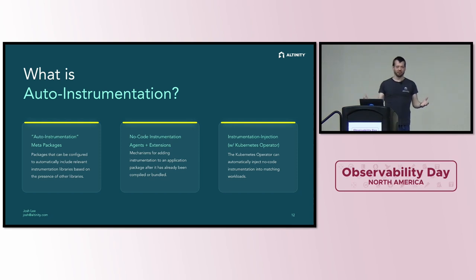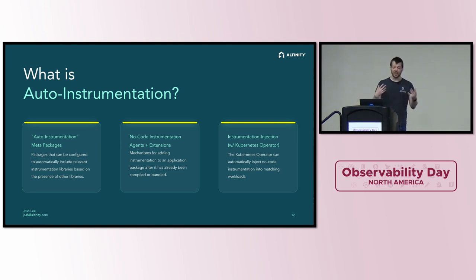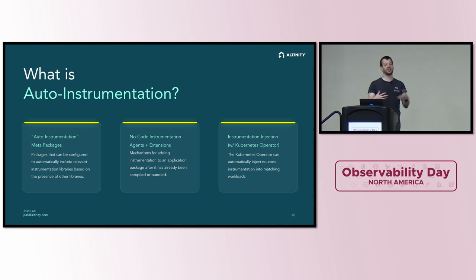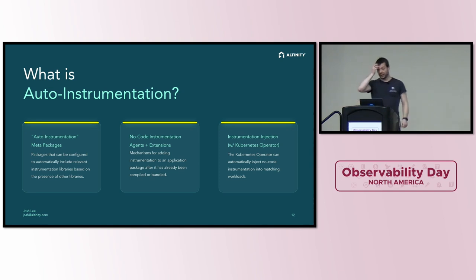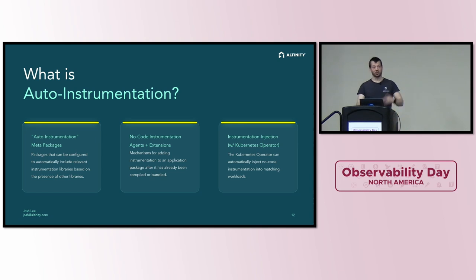So what actually is auto-instrumentation? Let's disambiguate. We have instrumentation libraries as the first step. Then we have auto-instrumentation meta-packages, which can observe what's happening inside the same code and pull in or activate other dependencies as needed. That's cool, but it's still inside our process. Then we get to no-code instrumentation agents and extensions — mechanisms to observe code after it's already been compiled or bundled, without modifying it. And then instrumentation injection with the Kubernetes operator automates putting those things in without modifying your Docker containers.